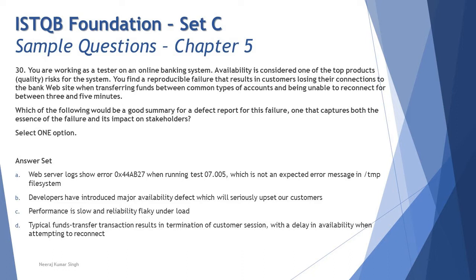Option C says: performance is slow and reliability is flaky under load. This is clearly talking about performance parameters covered under performance testing, not availability. In this scenario we are talking about availability — whether the system is available — not about performance being fast or slow. So option C is also incorrect.